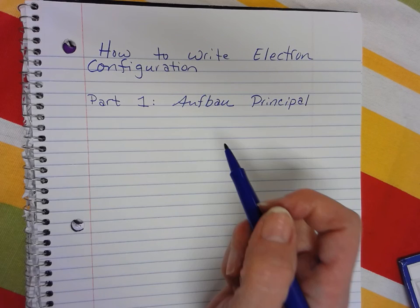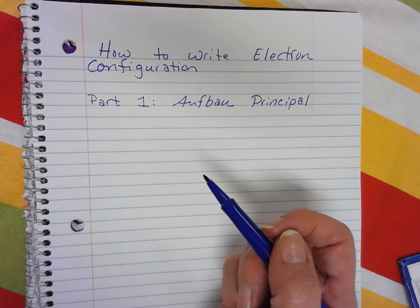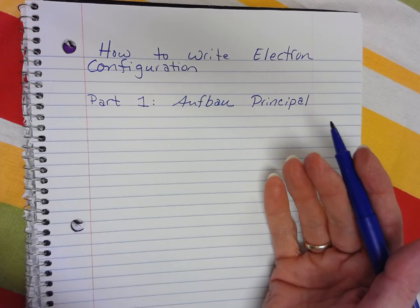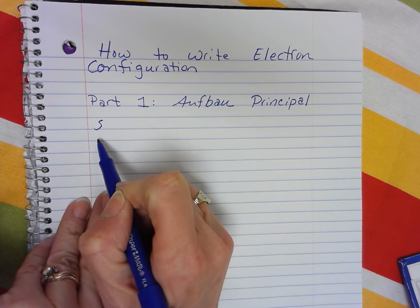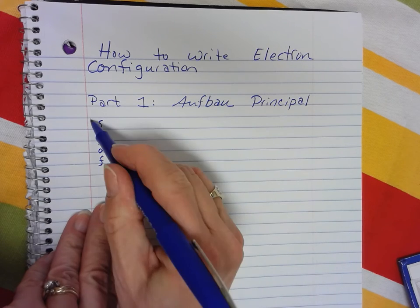In order to write the electron configuration, we have to know what order the electrons fill. It would be super easy if the S's filled, and then the P's filled, and then the D's filled, and then the F's filled. That's not what happens.